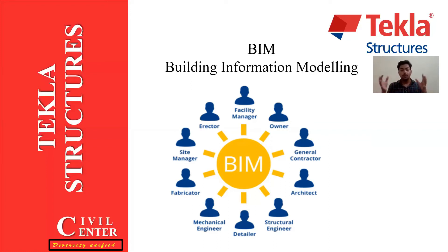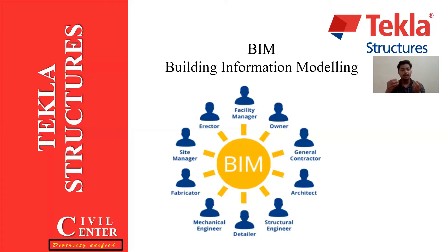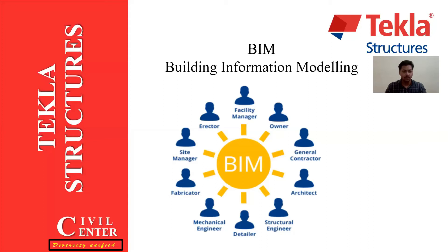What a BIM software does is collect information from all these persons and make it available for everyone. For example, if a director needs some information, he will not go to the architect — he will just find the required information from the BIM software, because the architect has already given all his information to the software. Similarly, if the general contractor needs some information, he feeds his requirement into the software and it can be fulfilled by the designated person, like the structural engineer.